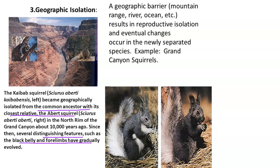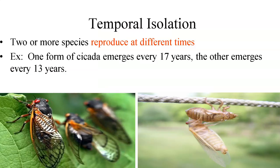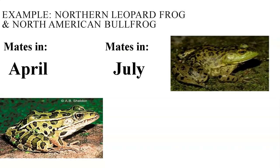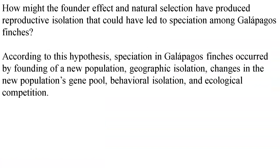Will Christians have an issue with this? The answer is no. We have two squirrels here that came from a common ancestor — that's not a problem. When we start talking about macroevolution, single cell to you, that's when Christians throw up a warning flag. Temporal isolation is when species reproduce at different times. One form of cicada emerges every 17 years, the other every 13 years — so they're missing each other by four years and won't be mating together. Similarly, one frog mates in April, the other in July. So this would be temporal isolation.